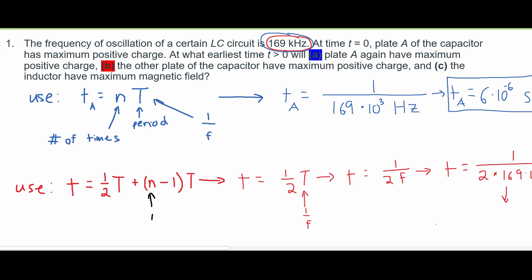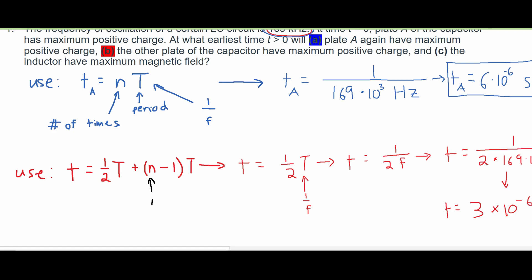And after we plug this into our calculator, we'll get our answer. And if we round this to a whole number, it's just going to be 3 times 10 to the negative 6, and we're still going to have it in seconds. That is our final answer for part B.